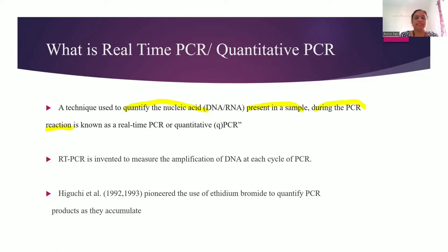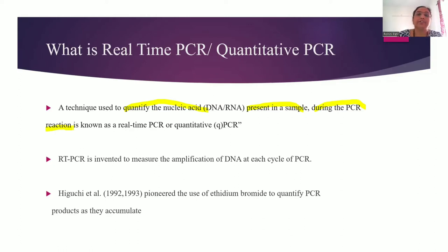In a normal PCR, we allow the reaction to complete all cycles, and after completion we identify or quantify the amount of DNA amplified. But if we want to know how much DNA is amplified at a particular cycle — say at the 20th cycle — we use the quantitative PCR, or real-time PCR, which is invented to measure the amplification of DNA at each cycle.